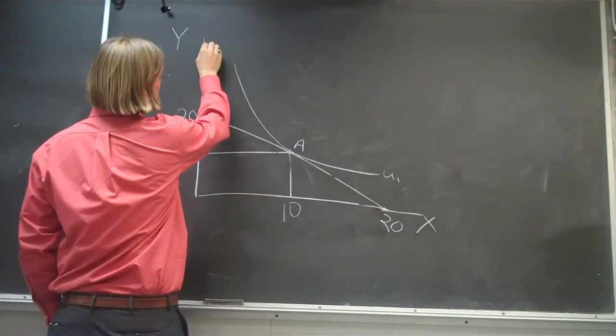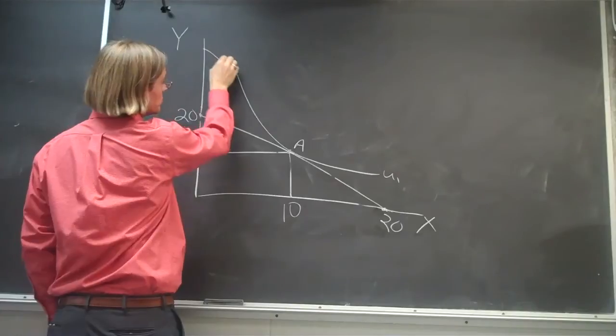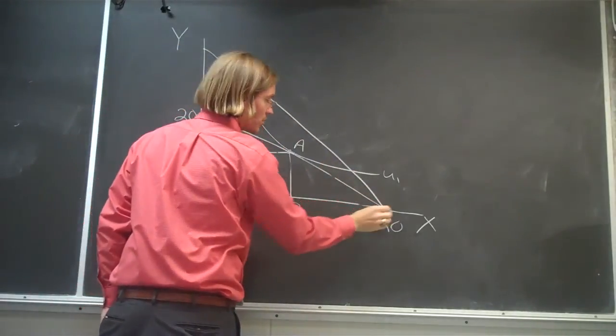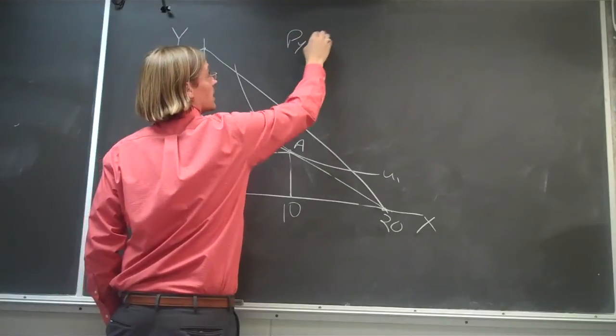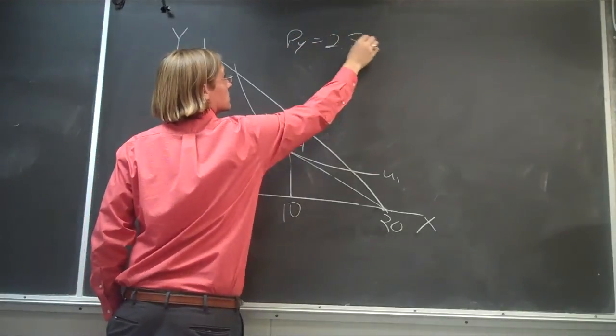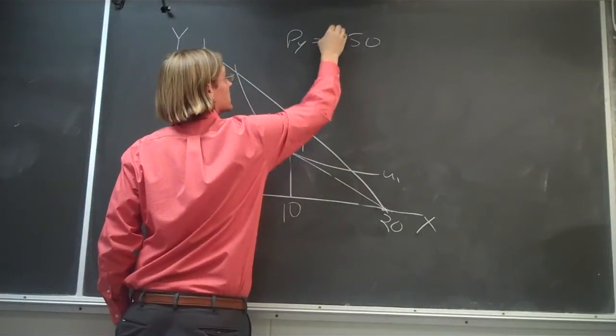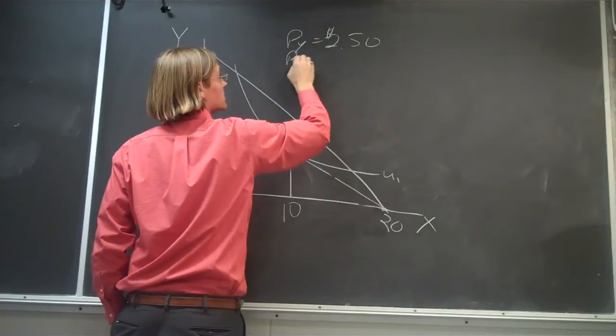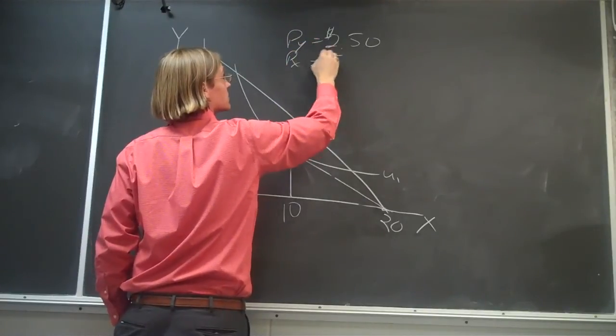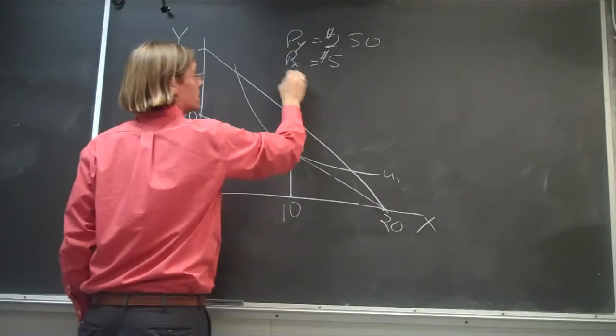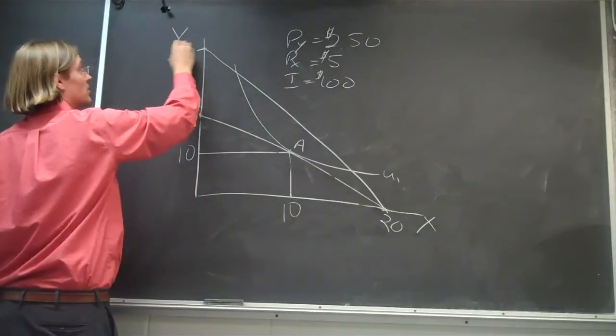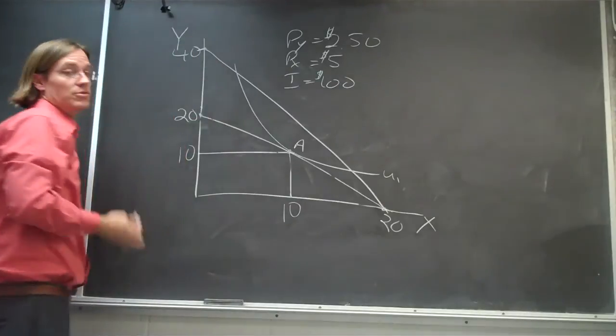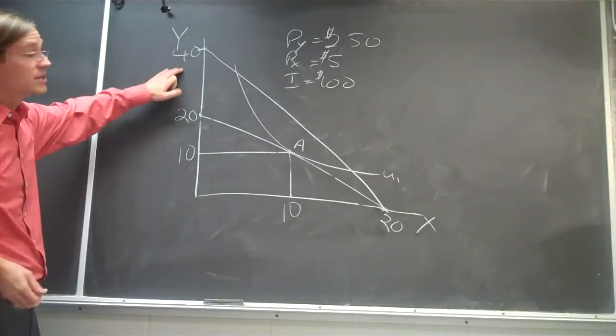So let's say if the price were cut in half, the price were cut to $2.50. So our new price for Y is 2 dollars and 50 cents. The price of X is still at 5 dollars, and our income is still 100 bucks.